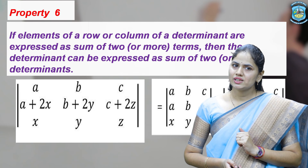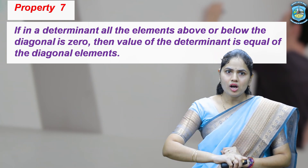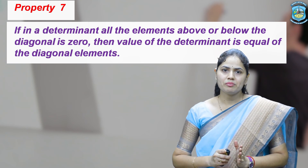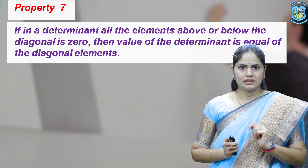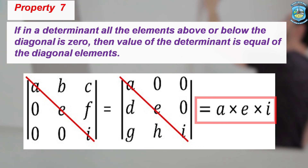The next property is very important: if in a determinant all elements above or below the main diagonal are 0, then the value of the determinant equals the product of the diagonal elements. In the first determinant, all elements below the main diagonal are 0; in the next, all elements above are 0. In such cases, you simply multiply all diagonal elements: a × e × i. These properties will be helpful in the expansion of determinants.